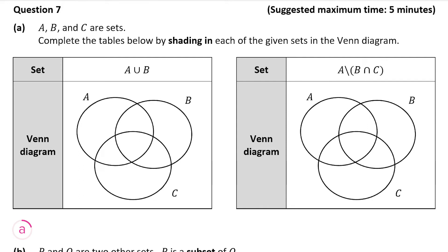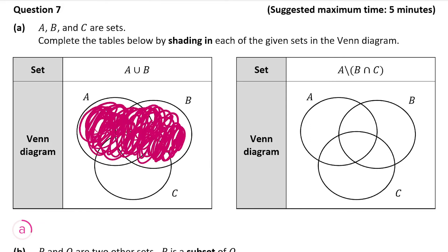To shade A union B, we'll be shading in circle A and circle B. We're not shading circle C, but there's going to be an overlap, so we will shade in the overlap but not the part of circle C that's just in C. We are going to shade in the overlap with C but not the part of circle C that's just in C without the overlap, as that's not going to be included in A or B.